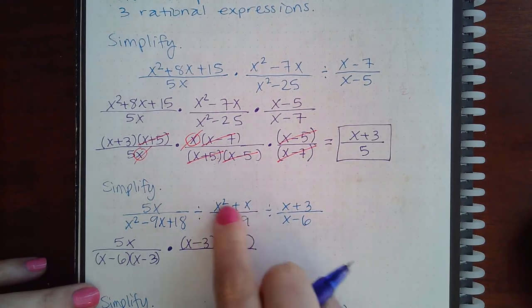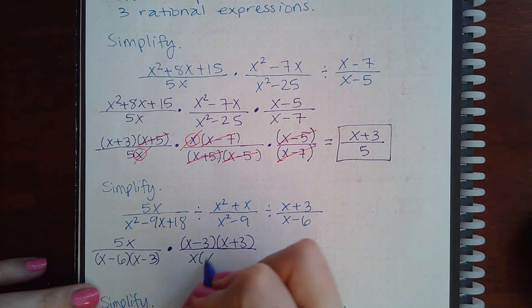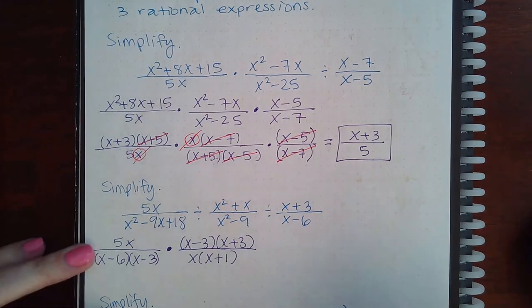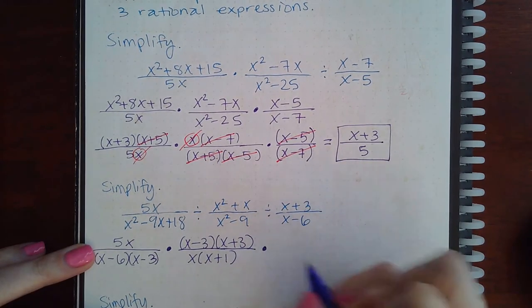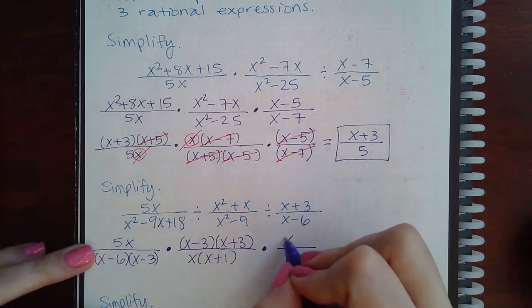x squared plus x is going to go to the bottom. And I'm going to factor out x. And that leaves me with x plus 1. Here I'm going to change that to multiplication. And this is going to flip over as well.